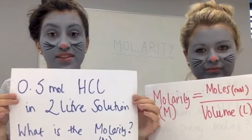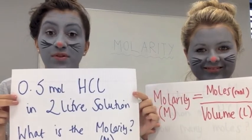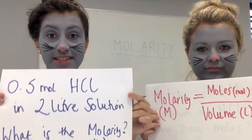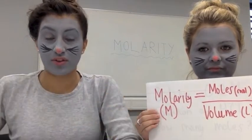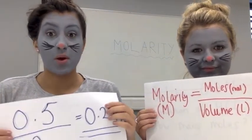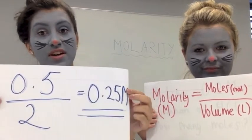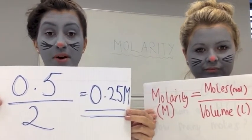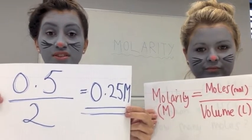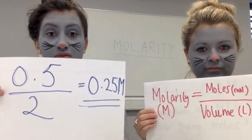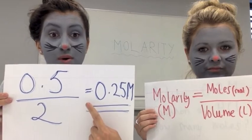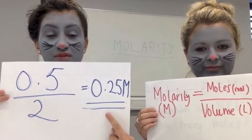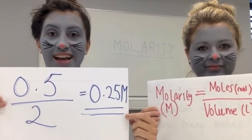For example, if we've got 0.5 moles of hydrochloric acid in a 2 litre solution, what is the molarity? Using this equation, we can plug in the values that we do know to find out the value that we don't know. 0.5 divided by 2 equals 0.25 molar solution — 0.5 is the moles and 2 is the volume in litres, so we get a 0.25 molar solution of hydrochloric acid.